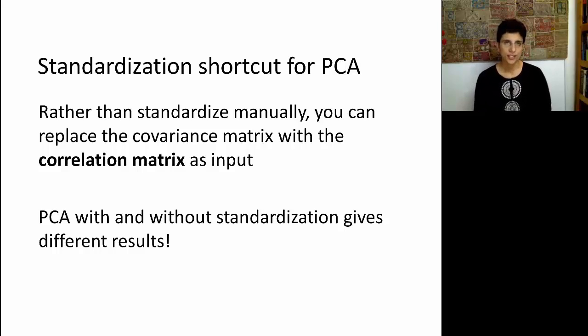In PCA, there's an interesting shortcut. It turns out that instead of first normalizing the data and then running PCA, you can simply operate instead of on the covariance matrix that we just talked about, you can operate on the correlation matrix. And that would be equivalent to working on the normalized variables. Okay? So rather than standardize manually, you can replace the covariance matrix with a correlation matrix as input into the procedure. Note that whether you run PCA with normalization or without normalization, which is equivalent to on the correlation matrix or on the covariance matrix, you will get different results.